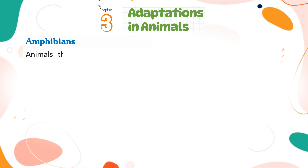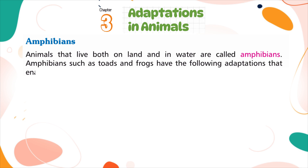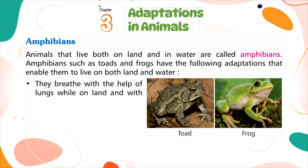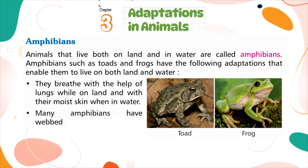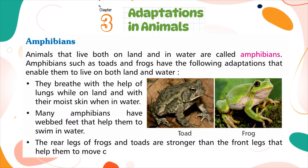Amphibians. Animals that live both on land and in water are called amphibians. Amphibians such as toads and frogs breathe with the help of lungs while on land and with their moist skin when in water. Many amphibians have webbed feet that help them swim. The rear legs of frogs and toads are stronger than the front legs, helping them move on land by jumping.